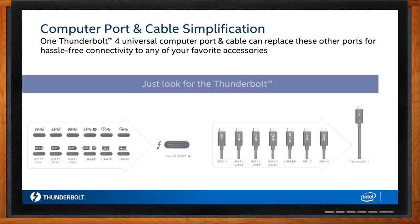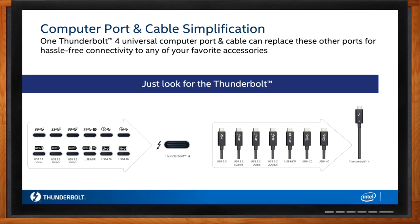Thunderbolt works with millions of accessories and devices currently on the market. Because Thunderbolt uses the same connector as USB-C, any accessory that works with a USB-C connector will work with Thunderbolt automatically. USB-C comes in many confusing variations — users often don't know if their port charges, supports 5, 10, 20, or 40 gigabits per second, or does display. Because Thunderbolt can do all of this, it is truly universal. Thunderbolt delivers on the promise of USB-C by offering one universal cable to replace all others.